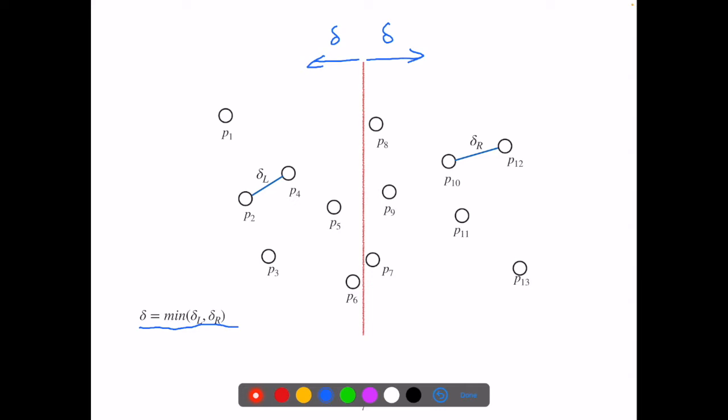since they cannot be less than delta from any points on the other side of the line. So we only need to consider points in this blue rectangle. Now we look at these points in ascending order by their y-coordinates.